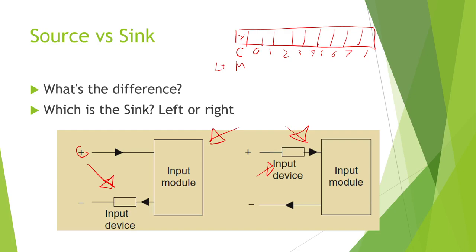On some add-on cards you can buy, it says source/sink input, so you can determine whether you put 0 volts or 24 volts to it to configure how the card works. If you don't connect the common, none of your inputs are going to work, because there's no complete loop — we don't have power and ground connected to that input.